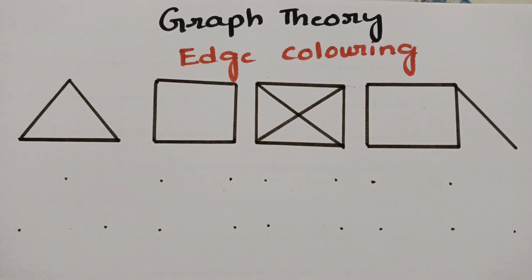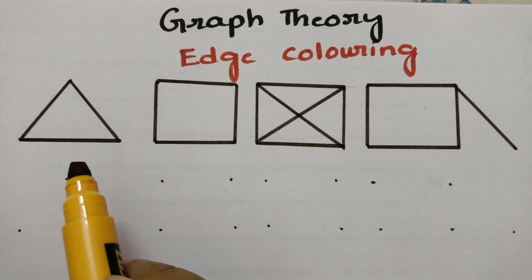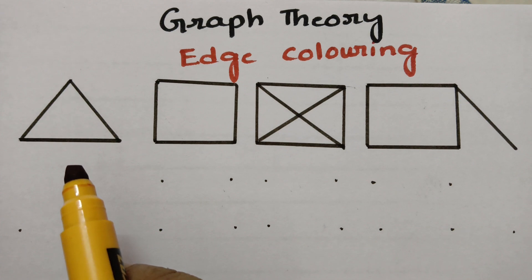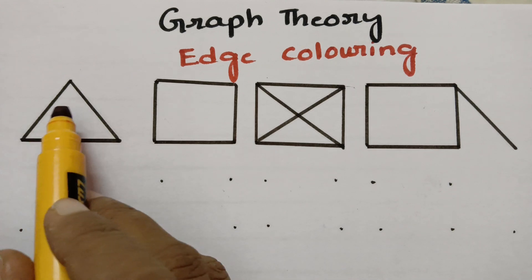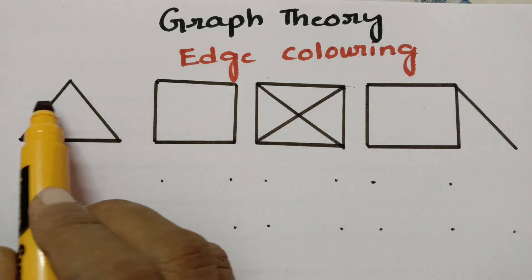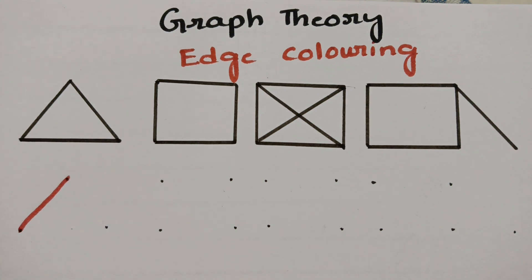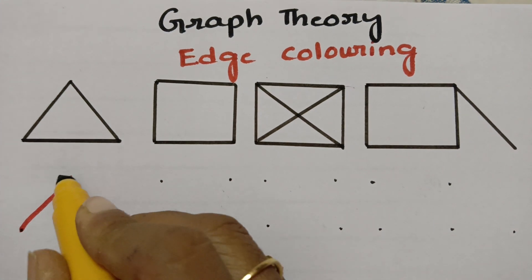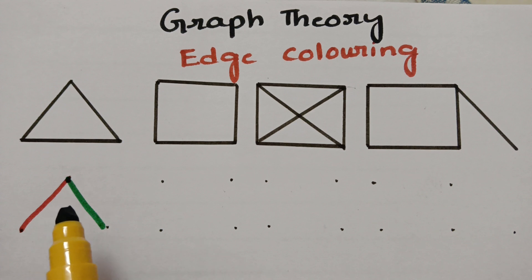Today's topic is edge coloring from graph theory. The key technique is that no two edges sharing the same vertex should have the same color — that is, no two adjacent edges should have the same color. That is the rule we have to follow before we color.